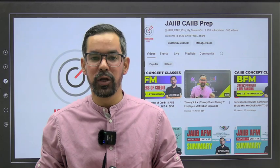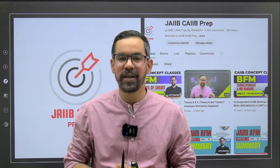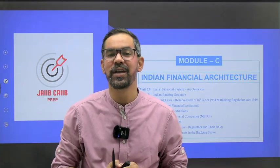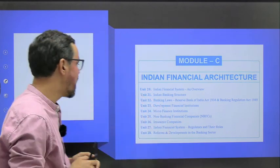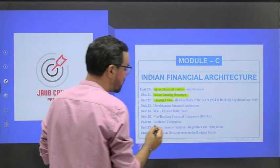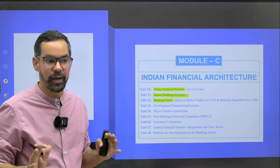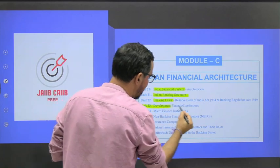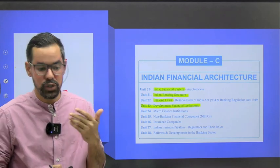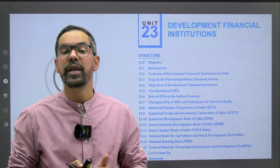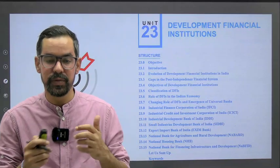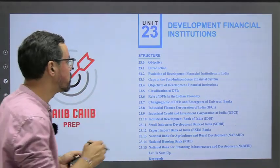Hello bankers, a very good morning to all of you. Welcome back. Today we are going to discuss about DFIs - Development Financial Institutions - which is Unit Number 23. Development financial institutions like NABARD, EXIM, NHB, and the newly built one is NaBFID.